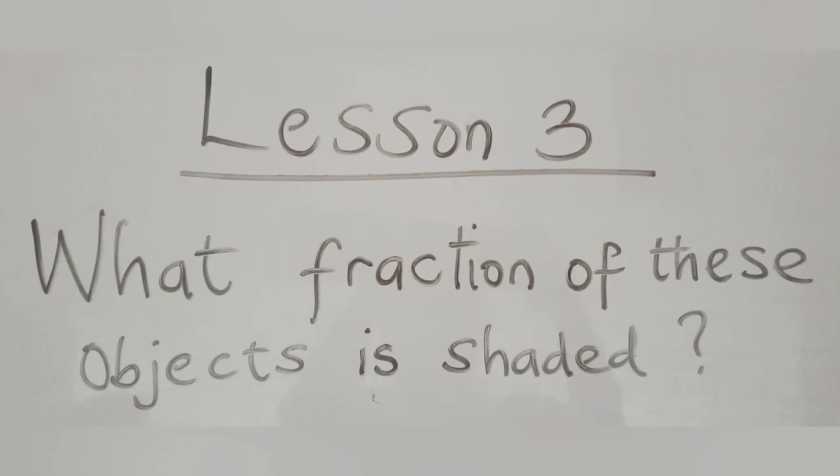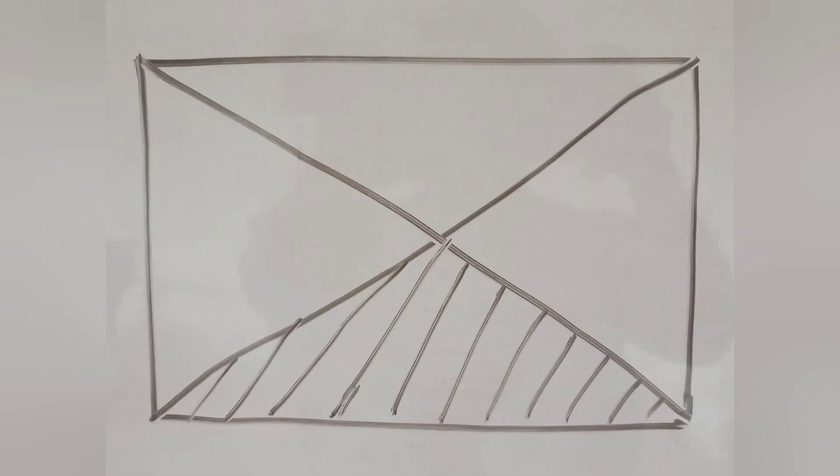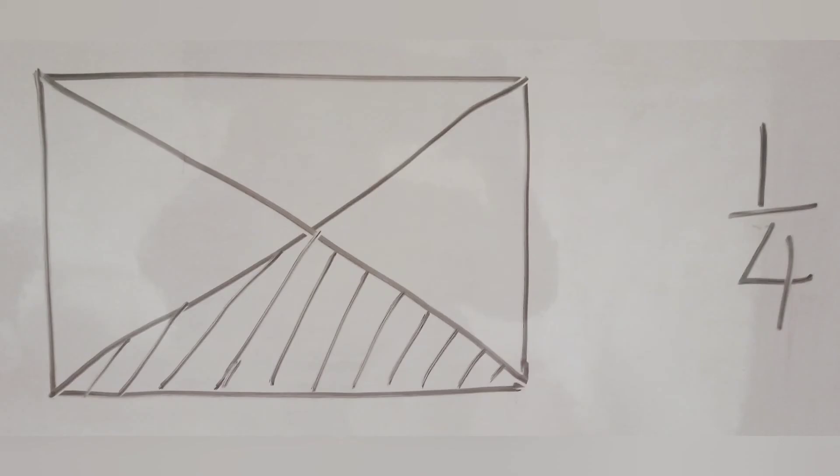Now, lesson 3. What fraction of these objects is shaded? Let's take a look at these objects. The first one is a rectangle. This rectangle is divided into 4 equal parts and 1 out of the 4 parts is shaded.